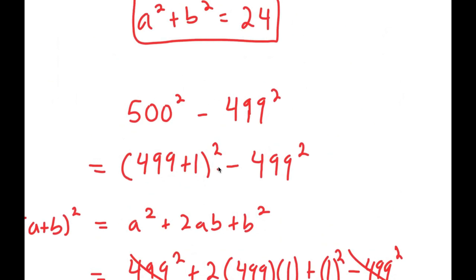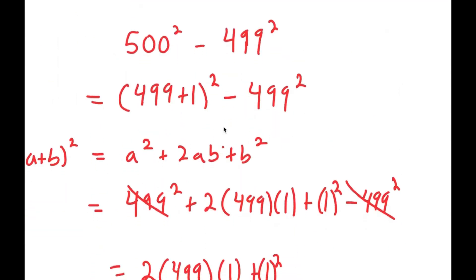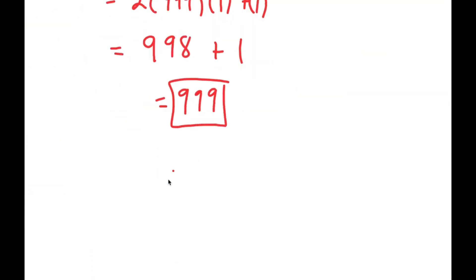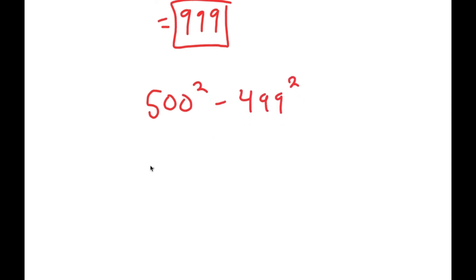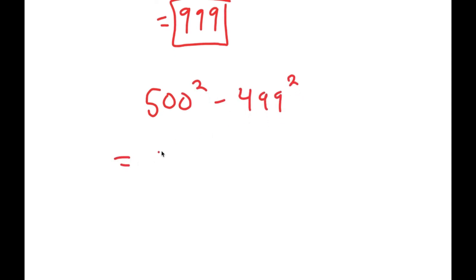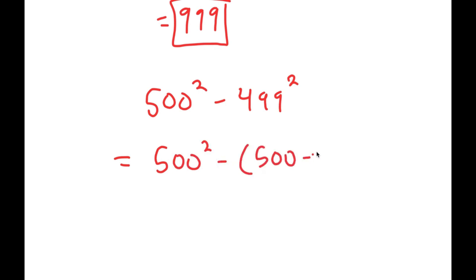Now I actually have another method of solving this. I have 500 squared minus 499 squared, and this time I'm going to write this as 500 squared minus 500 minus 1, squared.